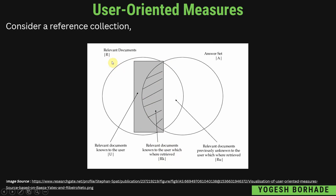To recap: the first set is relevant documents denoted by capital R; the answer set is denoted by capital A; the rectangle part denotes relevant documents known to the user, denoted by capital U; the white intersection part denotes relevant documents previously unknown to the user which were retrieved, denoted by R(u); and the shaded/lined part denotes relevant documents known to the user which were retrieved, denoted by R(k).